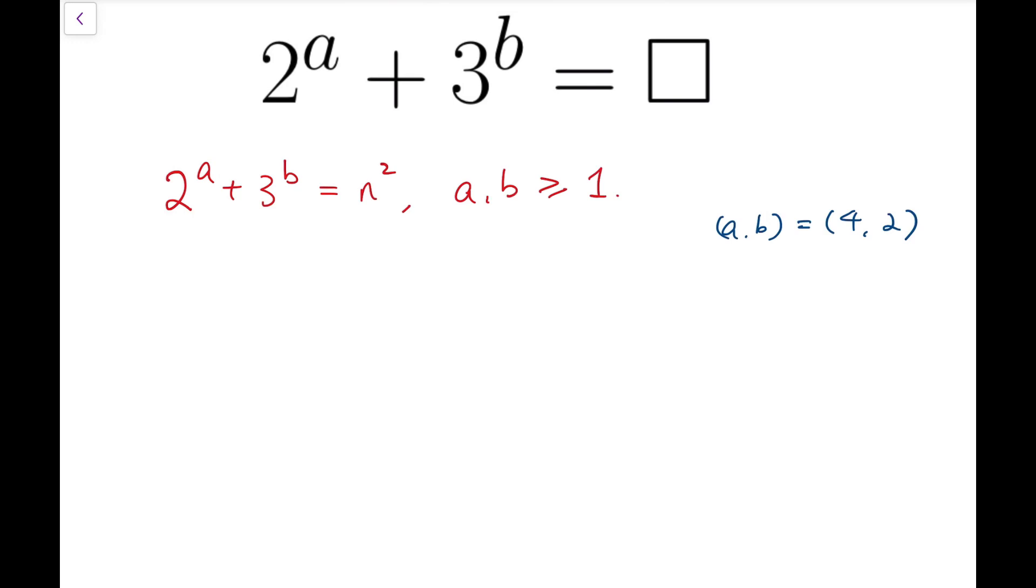So let's see what actually happens when a takes a smaller value, for example. So say when a equals 1, then the equation is 2 plus 3 to the power of b equals n squared.